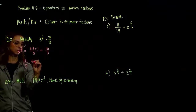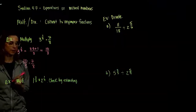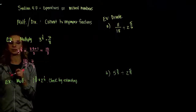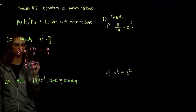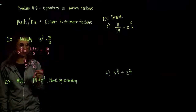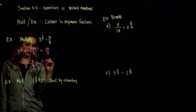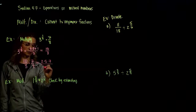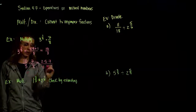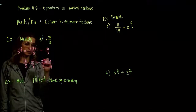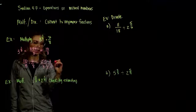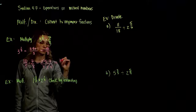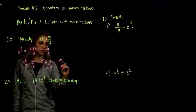Ten-thirds times seven-eighths — how do we compute that? We want to reduce, and ten and eight both share a factor of two. So let's break it up: ten can be split into two times five, and down below we've got three times eight, which we'll break into two and four. The common factor cancels out. Across the top, five times seven gives us thirty-five, and down below, three times four gives us twelve.